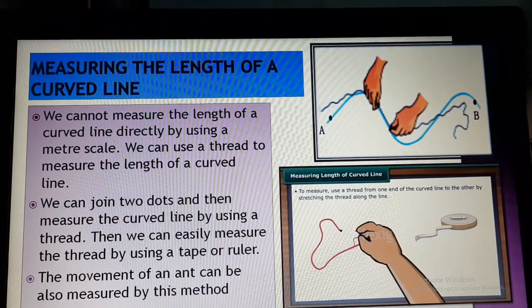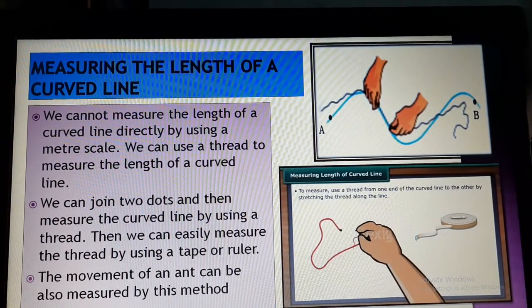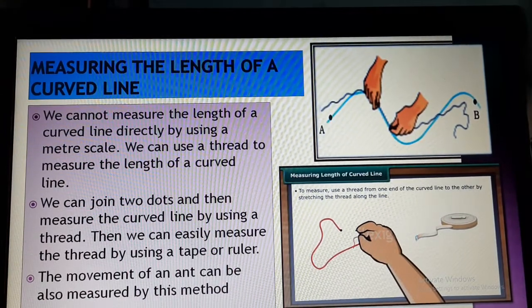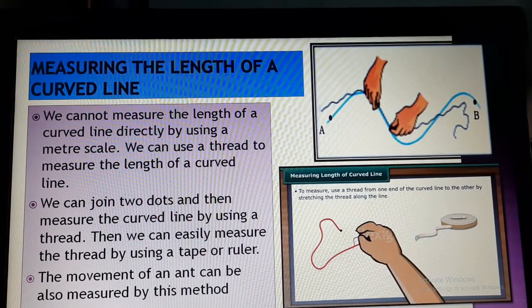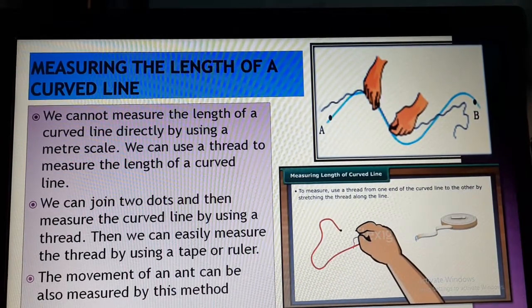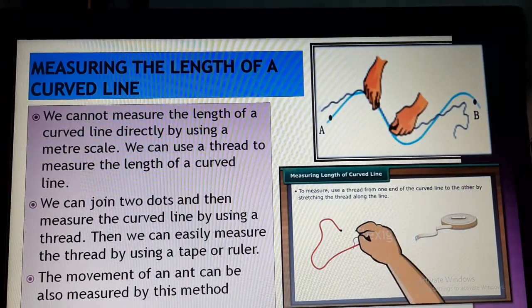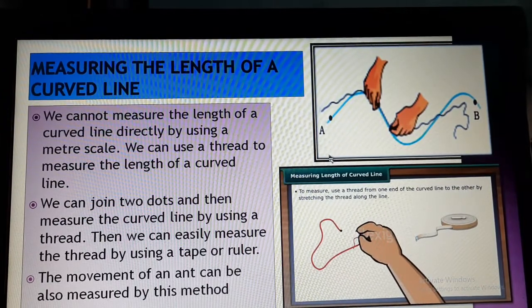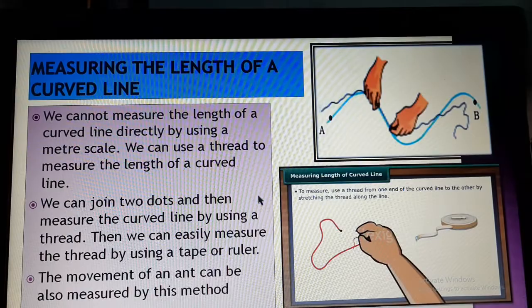Now here, see sometimes the ants, this is also there in your book as an activity. Sometimes ants also move on the floor or on a piece of paper. And you will see when the ants are moving, they are also moving in a curved line. They are not moving in straight lines. So if you want to measure the distance that how much an ant is traveling on a piece of paper, that activity is also given in your book. See, because the ant is moving in a curved line, so the process will be the same, measuring with a thread.